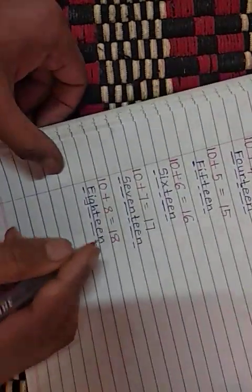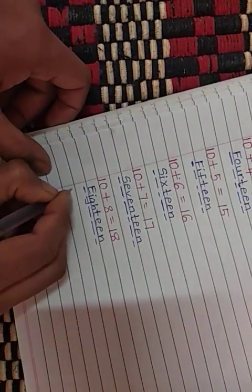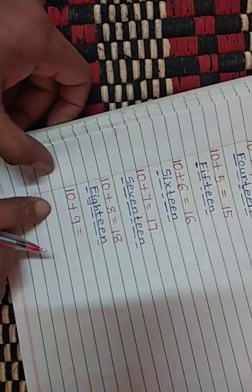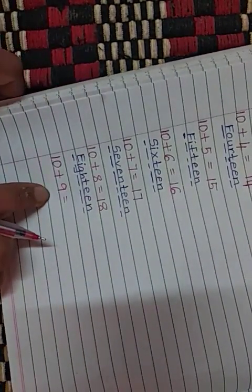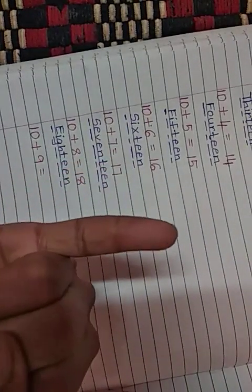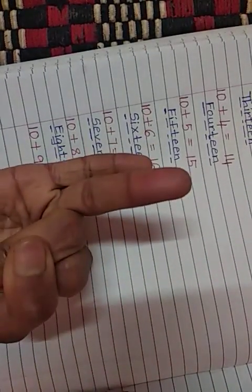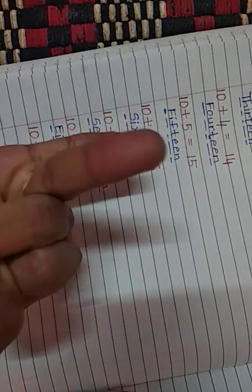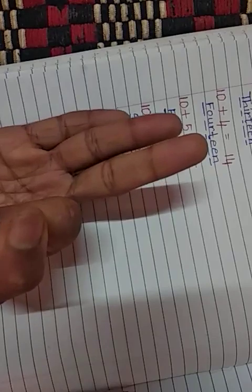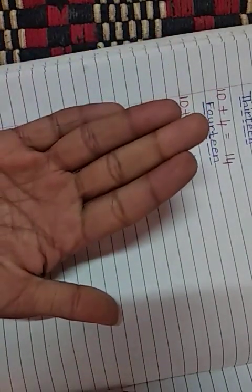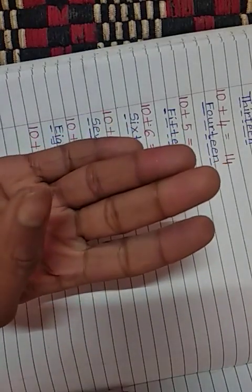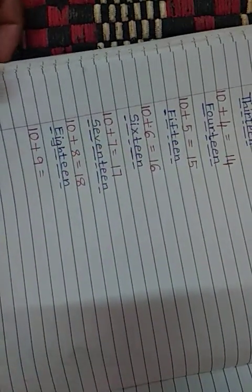Now, the next one. 10 plus 9. Count after 10 till 9. See: 11, 12, 13. Say with me children: 11, 12, 13, 14, 15, 16, 17, 18, 19. Answer is 19.